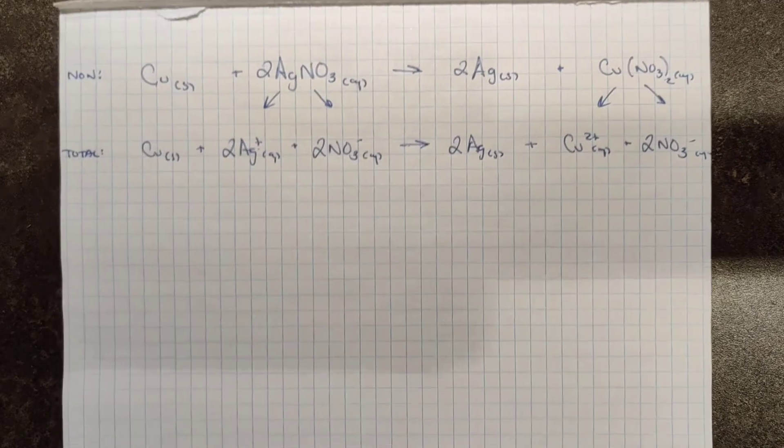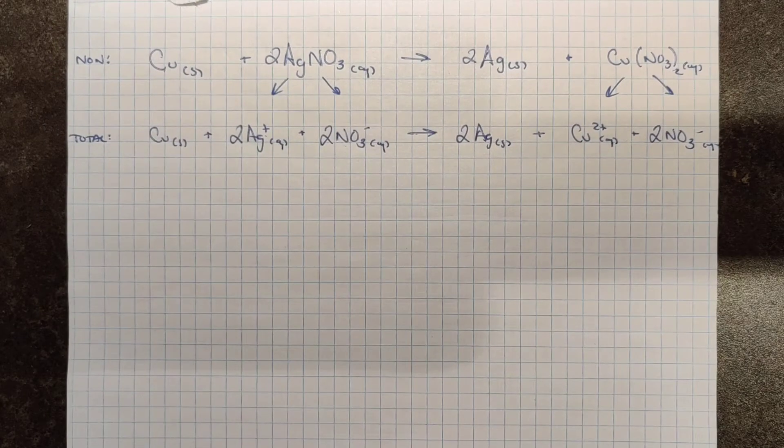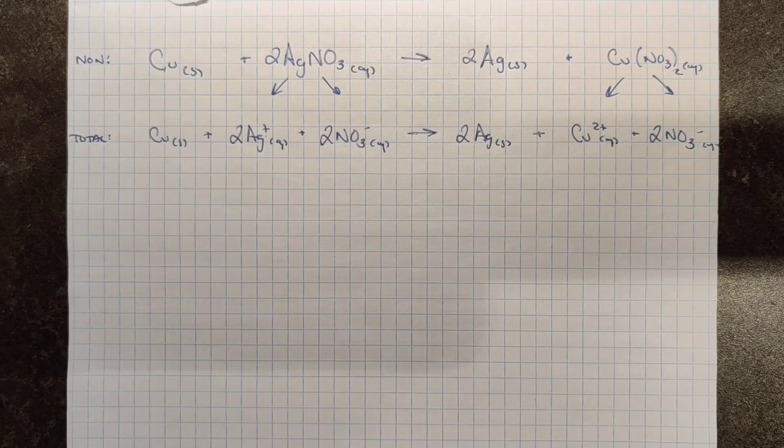I hope this is coming back to you guys. We dissociate all soluble ionic compounds, and we ionize any of our six strong acids. Those are the only things that really go through a change when we go between the non- and the total ionic equations.